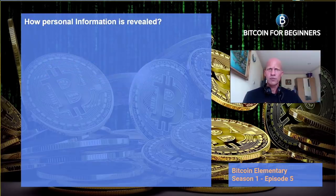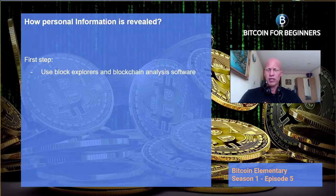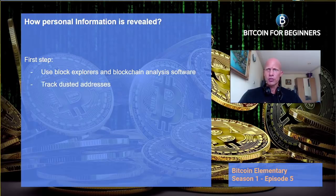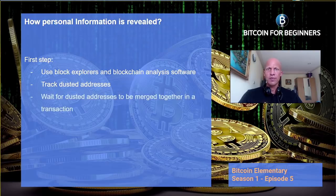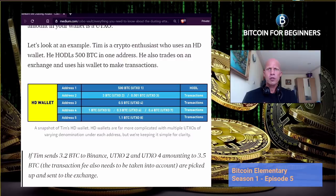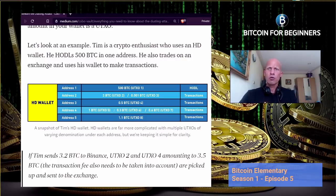How then is personal information revealed? For the first step, Bitcoin and other public blockchains have block explorers that are freely available for anyone to view all transactions both past and present. Scammers usually take advantage of these explorers to analyze transactions in addresses they've dusted by using blockchain analysis software. The attacker then tries to track the dusted addresses to see with which other addresses they might be merged in one single transaction. We need to understand how UTXOs of different wallet addresses from your wallet can be merged in a single transaction, helping an attacker to identify which addresses belong to the same owner.